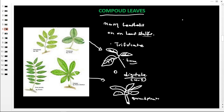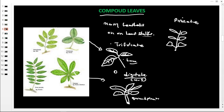Another example of a compound leaf is compound pinnate. With compound pinnate, the main leafstock produces other small leafstocks called rachis, and each rachis carries a leaflet. Pinnate means the leaflets are arranged in opposite directions to each other. This arrangement is called the pinnate arrangement, and the basic example is the acacia plant, which bears yellow flowers.